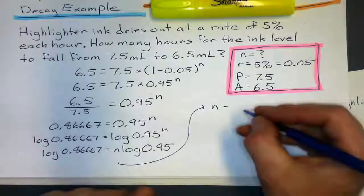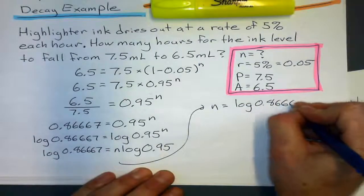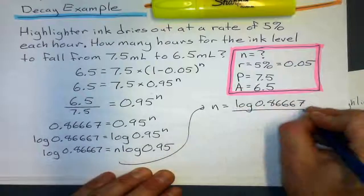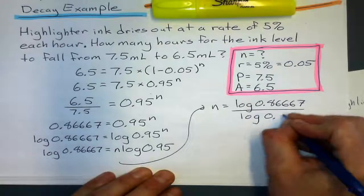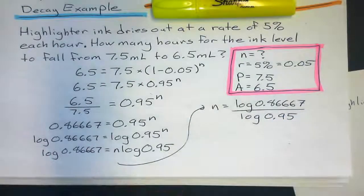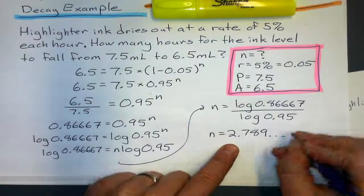Always. Okay, so it's going to be log 0.86667 divided by log 0.95.